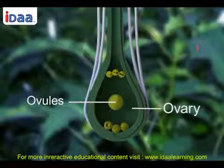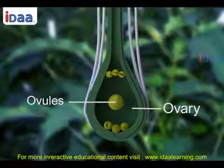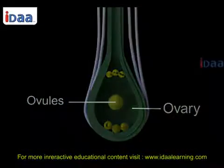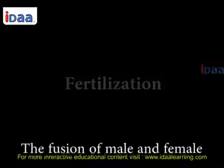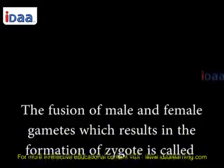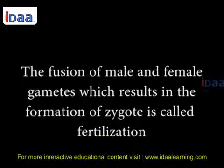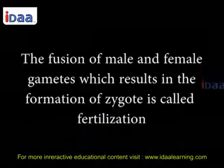Sexual reproduction in plants also involves the fusion of male and female gametes to form a zygote. The fusion of male and female gametes which results in the formation of a zygote is called fertilization.